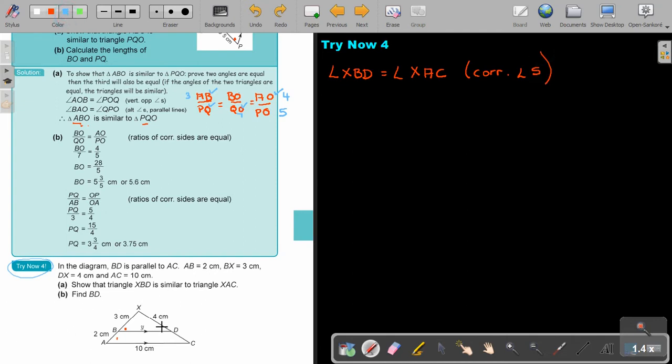And then the same on this side. There's my F again. It's angle XDB is equal to angle XCA, and it will again be corresponding angles. Therefore, triangle XBD is similar to triangle XAC. If I'm going to start with this one, my ratio.